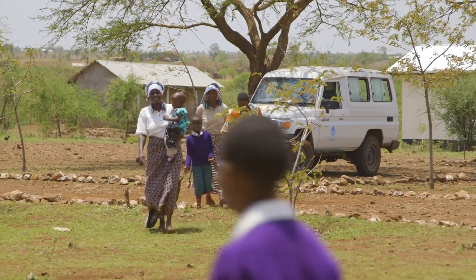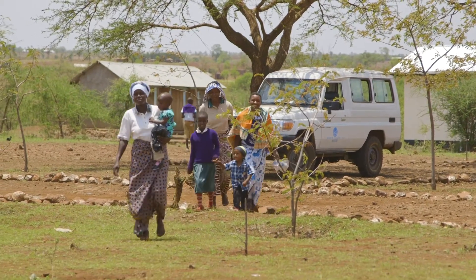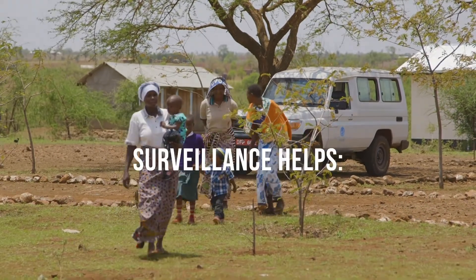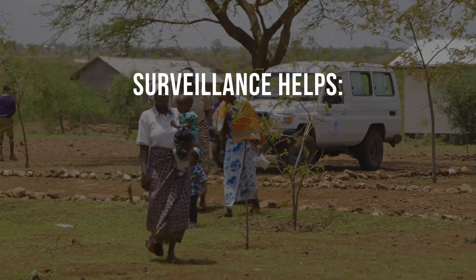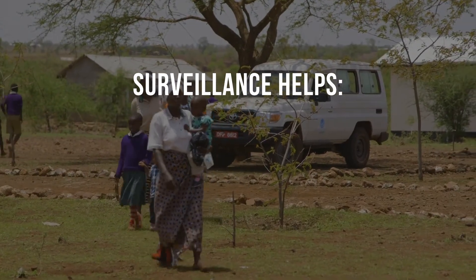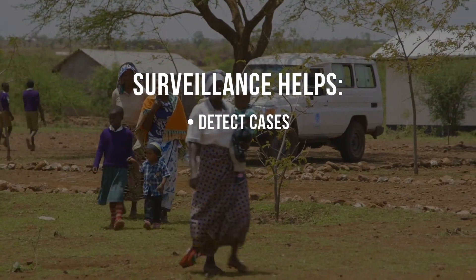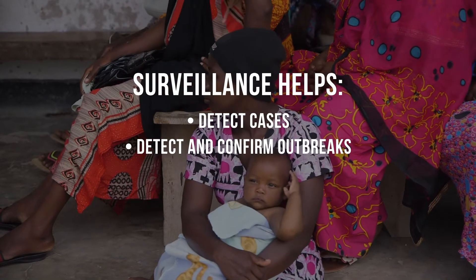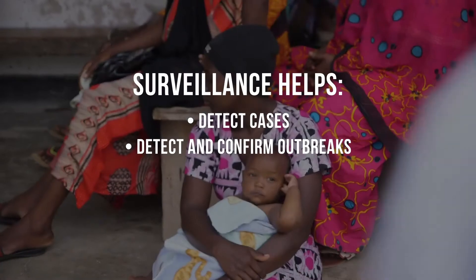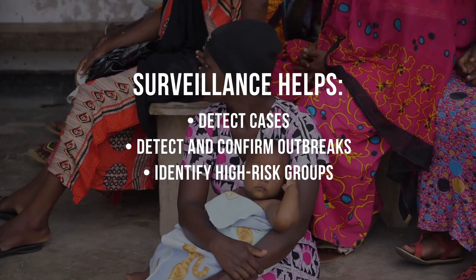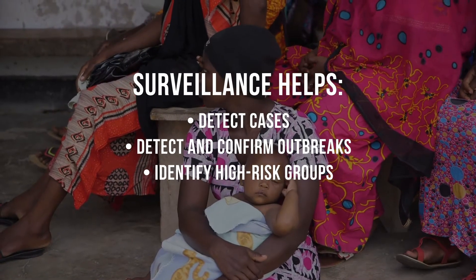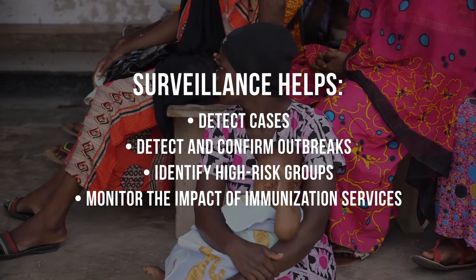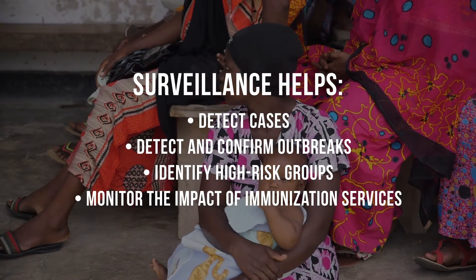Surveillance is a critical part of every immunization program. It helps guide disease control activities by detecting cases, detecting and confirming outbreaks, identifying high-risk groups, and monitoring the impact of immunization services.